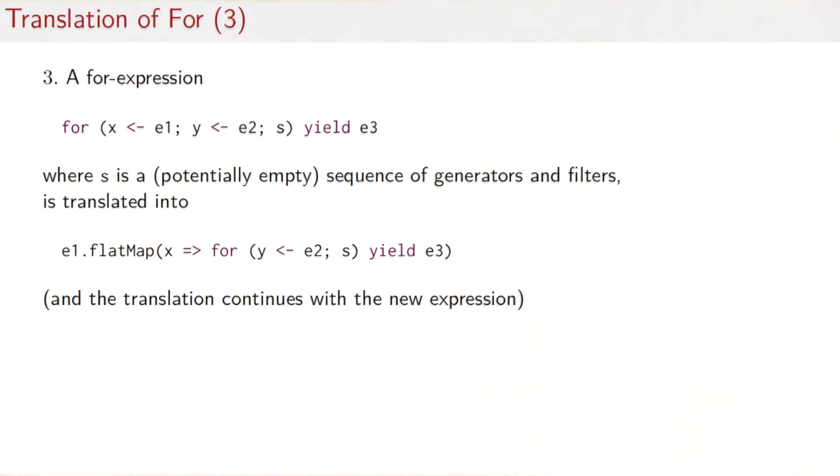The third and last form of for expressions that we need to cover is the one where a leading generator is followed now not by a filter but by another generator and that in turn can be followed by an arbitrary sequence of filters and generators s.